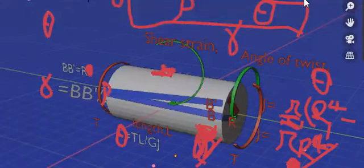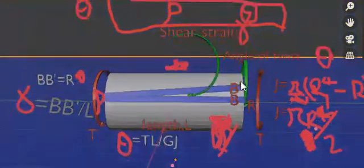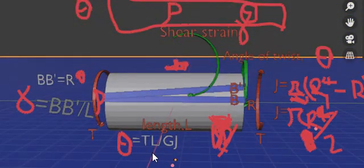From constitutive law, we can calculate the angle theta, which is the torque times the length, divided by the shear modulus times the J.